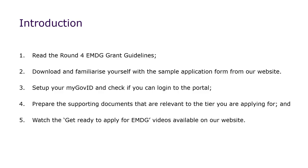Before you start your application form in the portal, you will need to: read the Round 4 EMDG grant guidelines; download and familiarise yourself with the sample application form from our website, and perhaps even pre-fill your responses in the sample application form where possible so that you can copy and paste them into the online form when it opens; set up your digital identity and check if you can log into the portal; prepare the supporting documents relevant to the tier you are applying for; and watch the 'Get Ready to Apply for EMDG' videos available from our website.